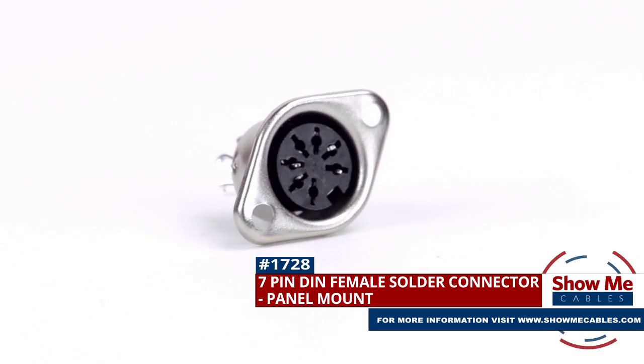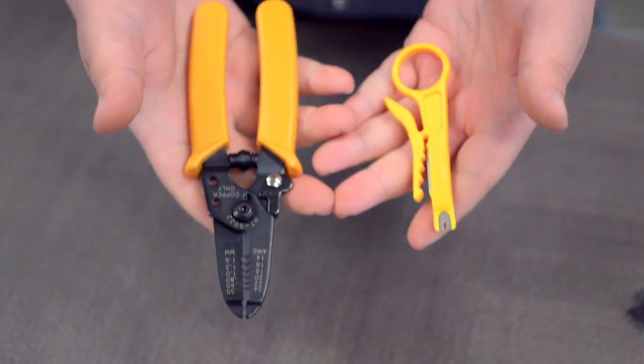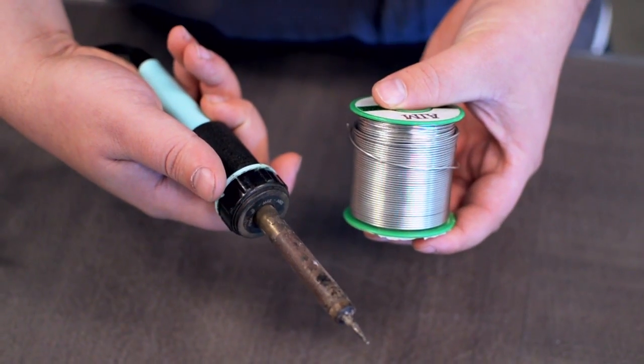To install, you will need the following items: low voltage cable, wire strippers, solder and soldering iron, and the DIN connector.